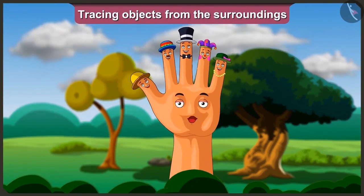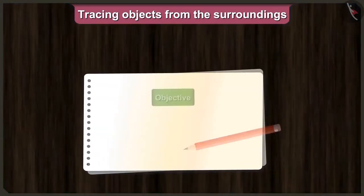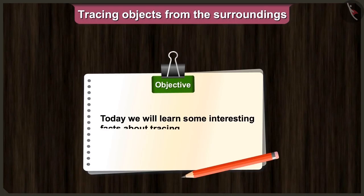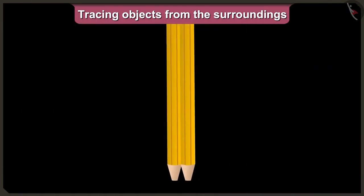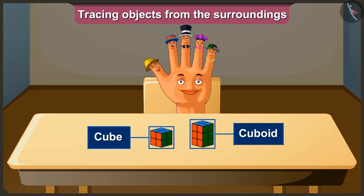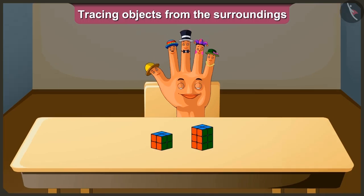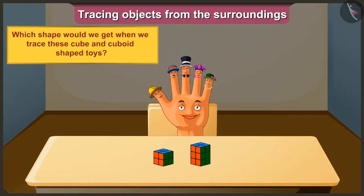In the last video, we understood the shapes we get when we trace objects from our surroundings. Today we will understand some interesting facts related to tracing objects. Look — this is a cube-shaped toy and this is a cuboid-shaped toy. Now tell me: which shape would we get when we trace these cube and cuboid shaped toys?